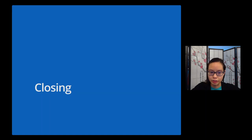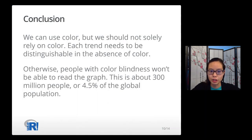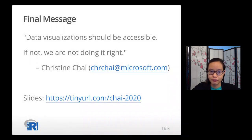In conclusion, we can use color, but we should not solely rely on color. Each trend needs to be distinguishable in the absence of color. Otherwise, people with color blindness won't be able to read the graph. This is about 300 million people, or 4.5% of the global population. The final message is, data visualizations should be accessible. If not, we are not doing it right. Thank you.